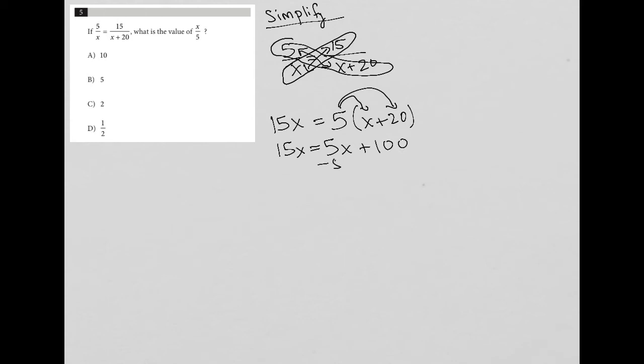I can subtract 5x from both sides here, and I'm left with 10x is equal to 100. Divide of course by 10 and I get x is equal to 10.